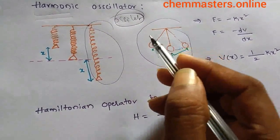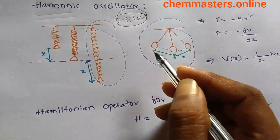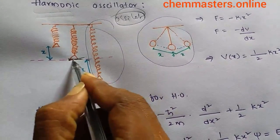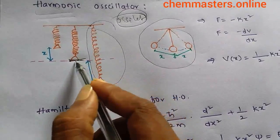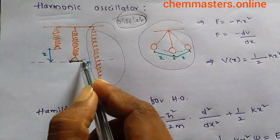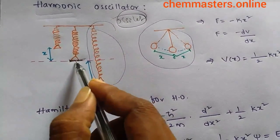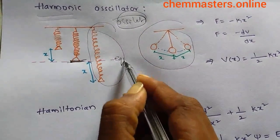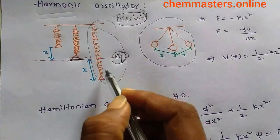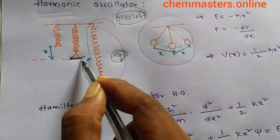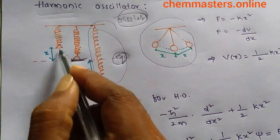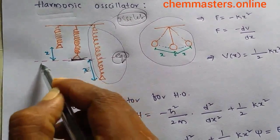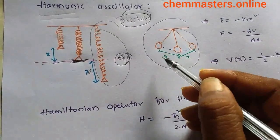The system contains a part that experiences a restoring force proportional to the displacement from equilibrium. Consider the equilibrium position of this spring — it has a restoring force proportional to displacement. By stretching, it is displaced from its equilibrium position by distance x, and if compressed, it is also displaced by distance x from equilibrium.